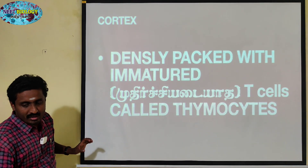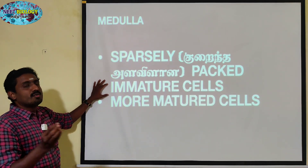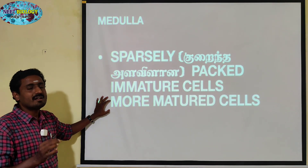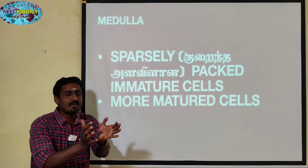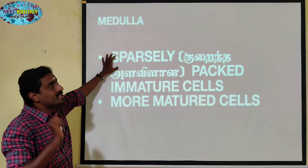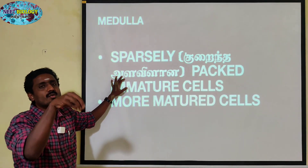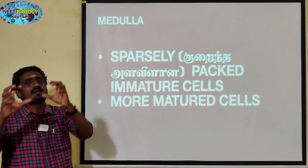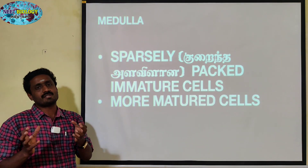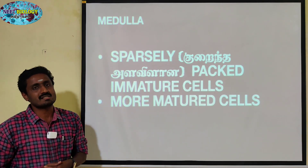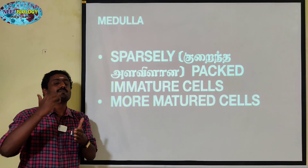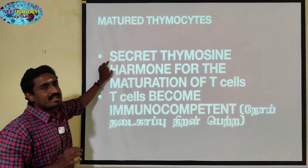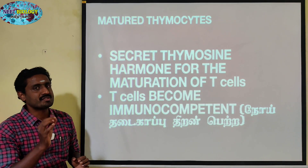Next, the thymocytes will be moved into the medulla. Some of the immature cells will be sparsely arranged in the medulla. The immature thymocytes are called thymocytes, and the mature T cells are thymocytes. The mature thymocytes secrete the hormone called thymosin.